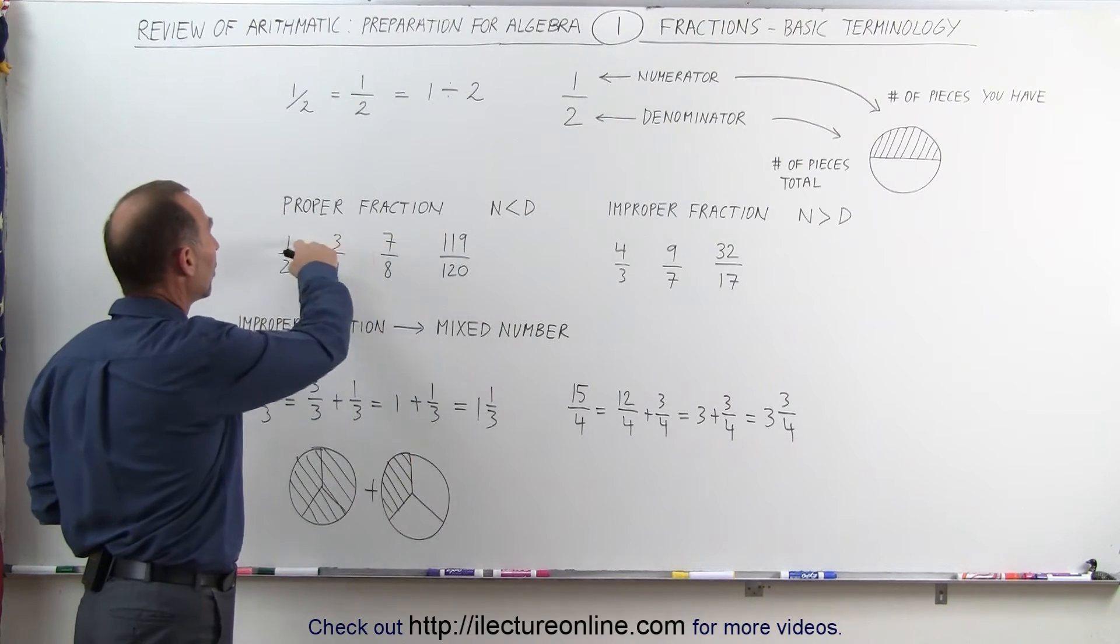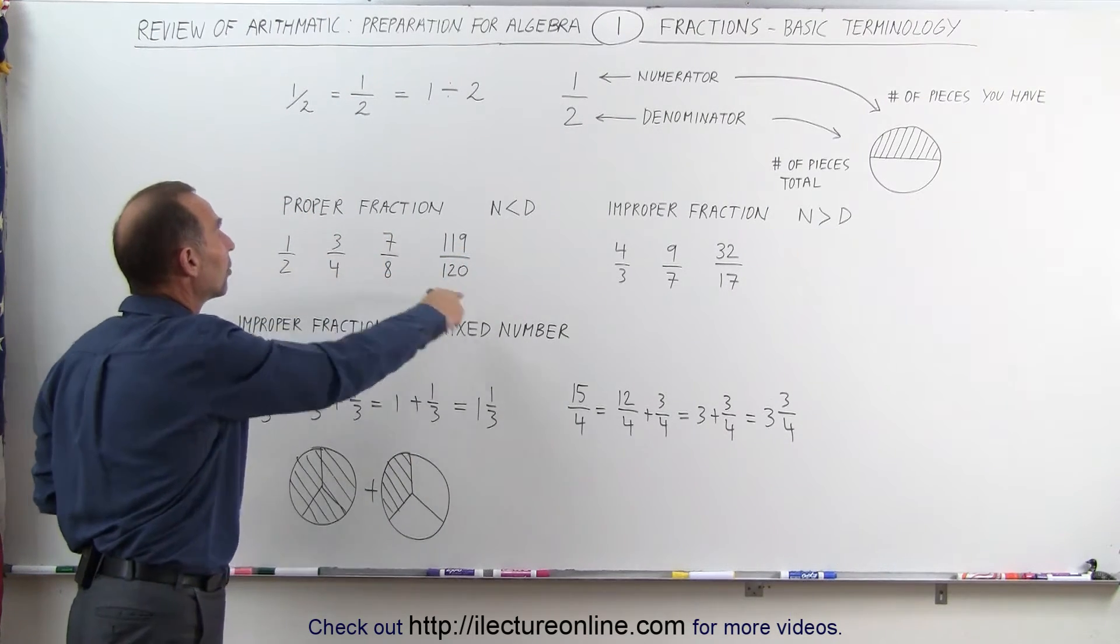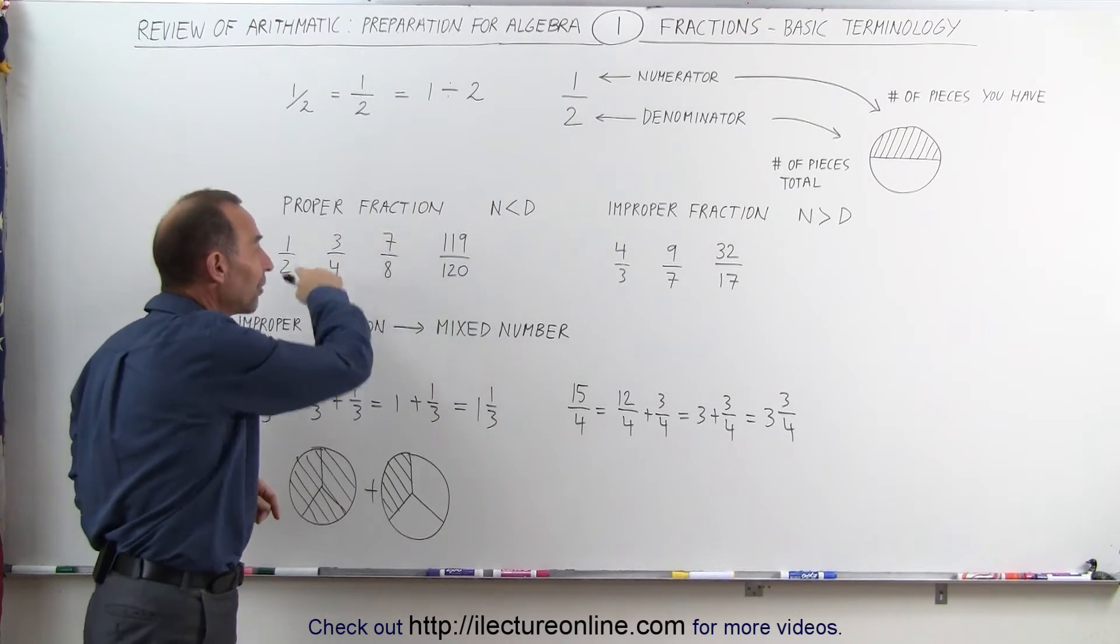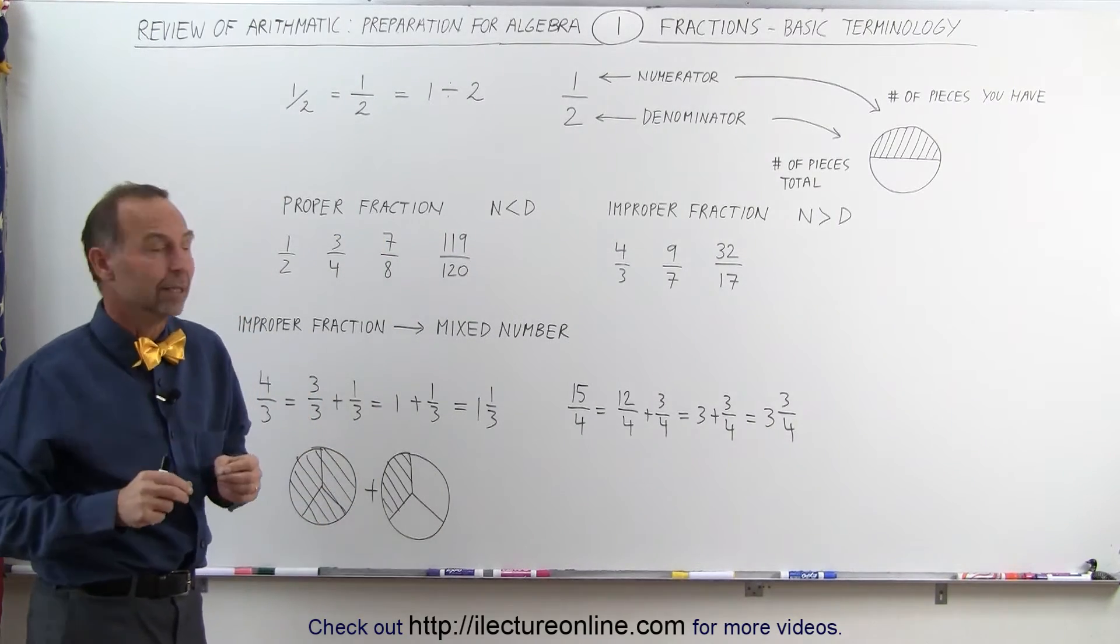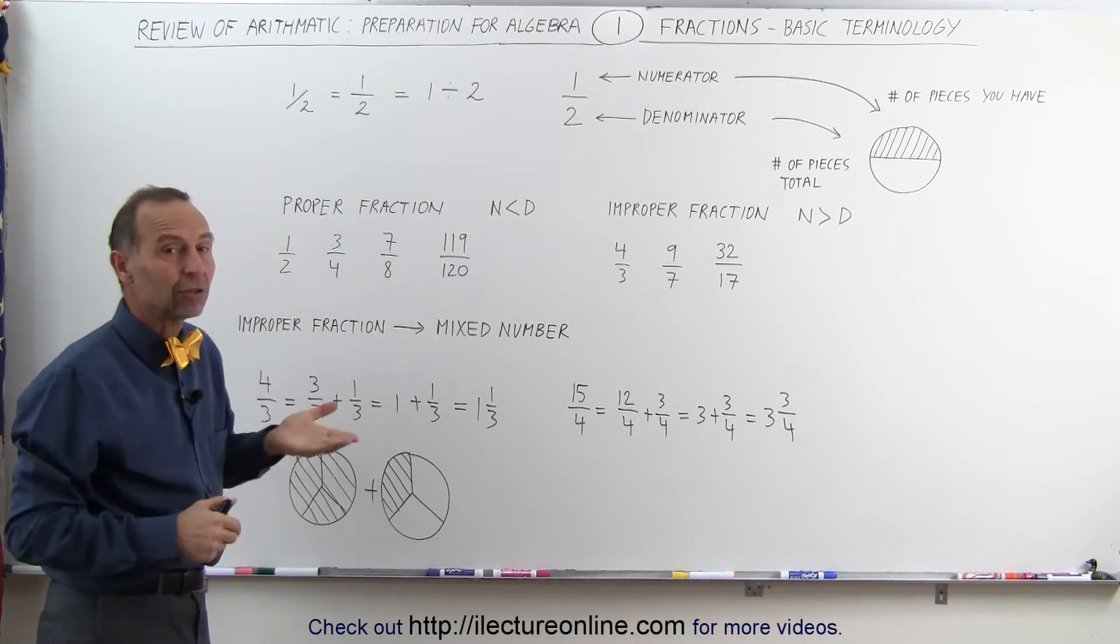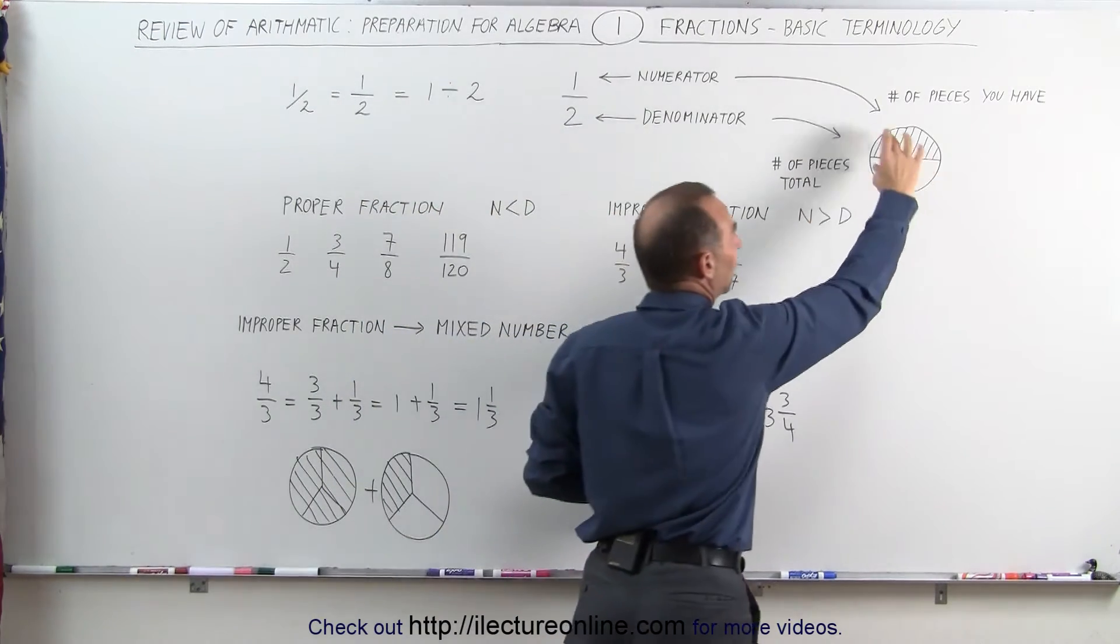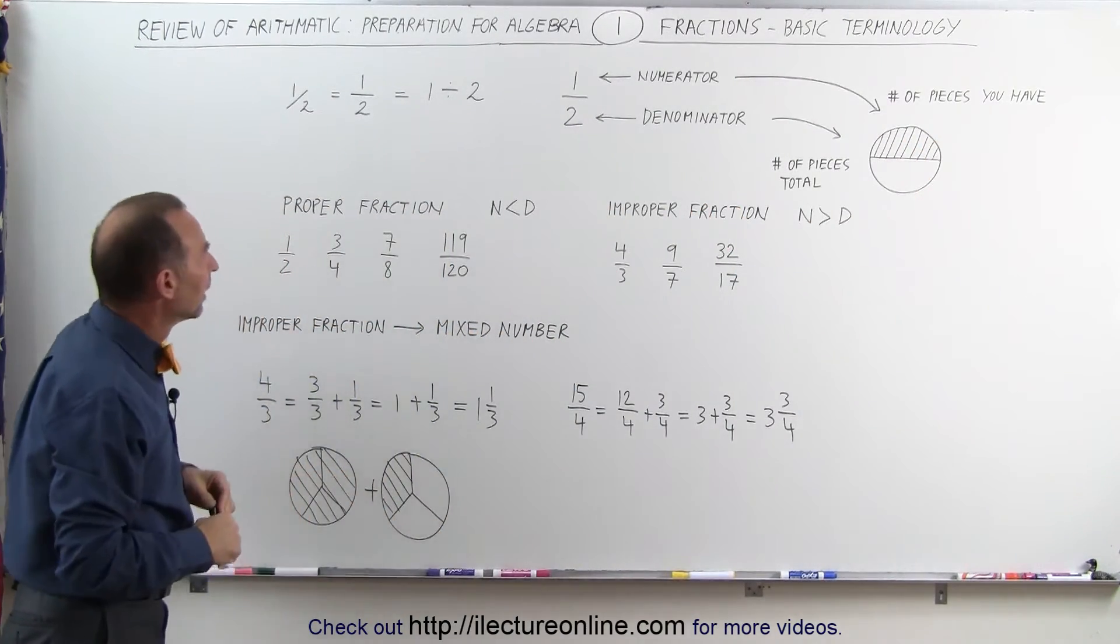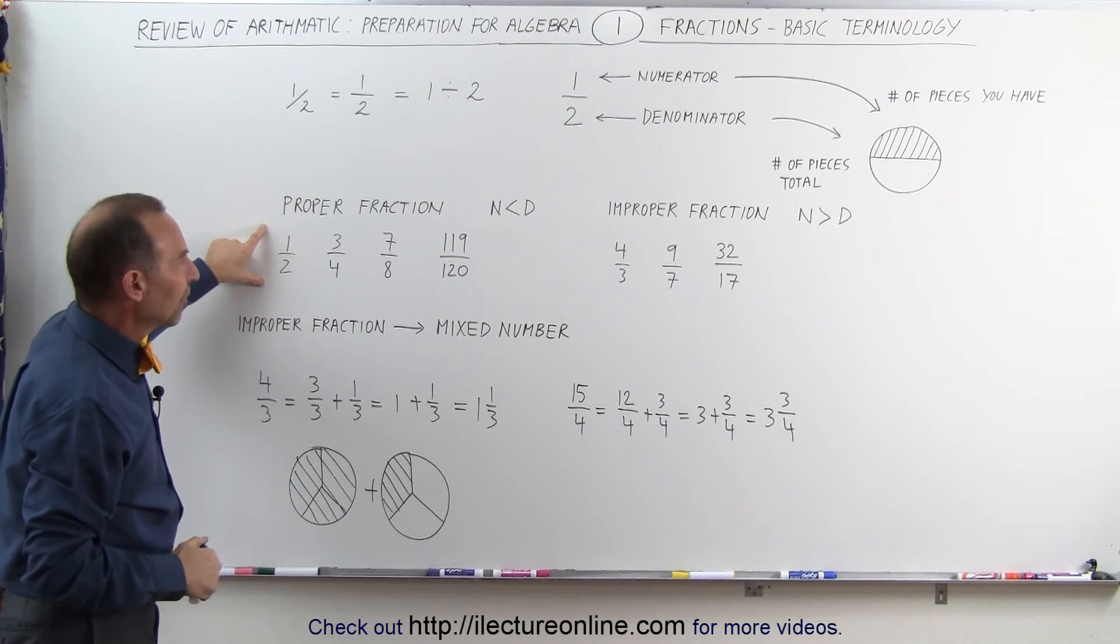You can see that in all cases, the number on top—the numerator—is smaller than the number on the denominator, which means all these fractions are less than 1. If the numerator is smaller than the denominator, the fraction has a value less than 1, meaning you don't have the whole circle—you have only a portion of the circle. They're called proper fractions.